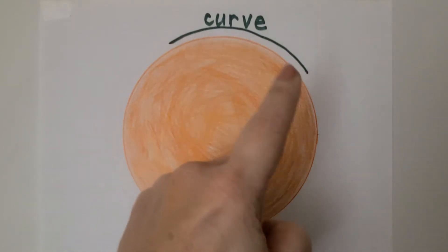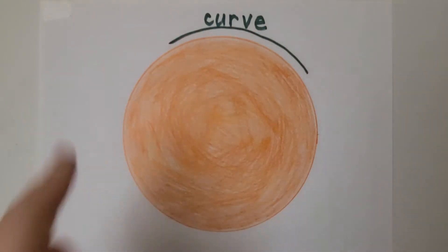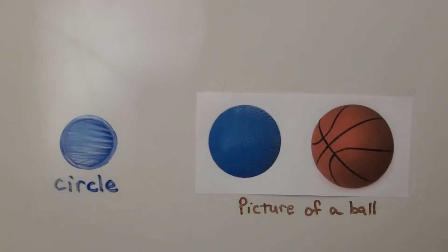It's got a curve. Circles are round and curved and flat. Here we have a circle. A circle is round, curved, and flat.